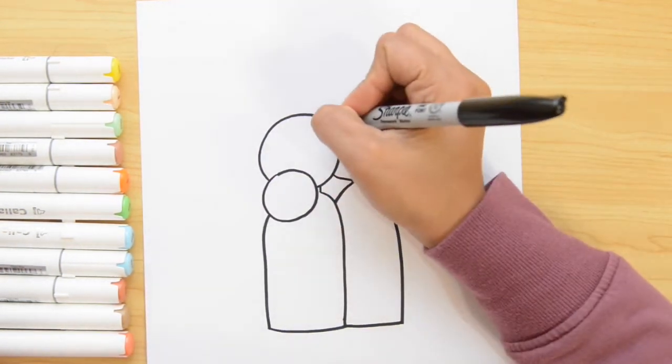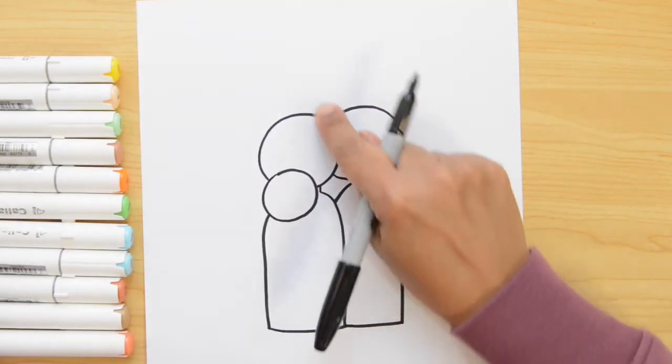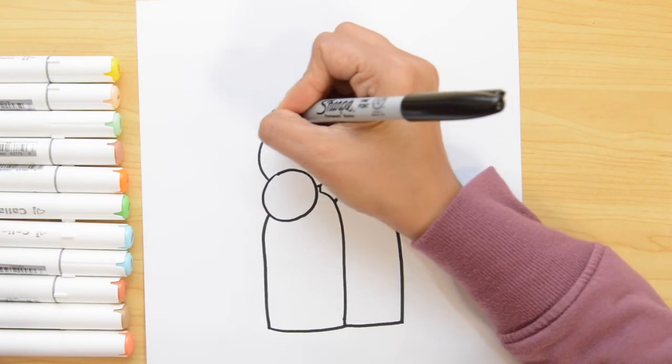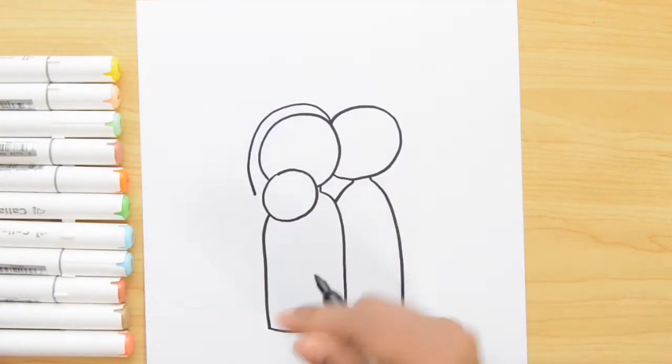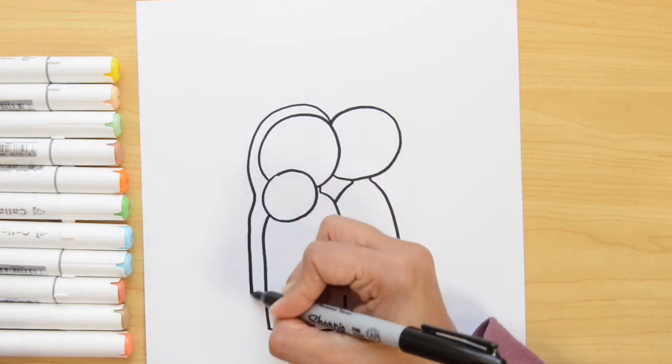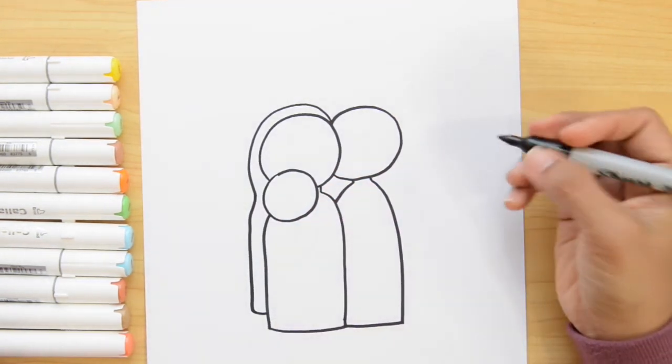Let's continue with Mary's veil and we're gonna start here from the center and going down kind of like the height of where baby Jesus head is and stop right there. And from this point I'm gonna go down and then this line is open a little bit and close here.